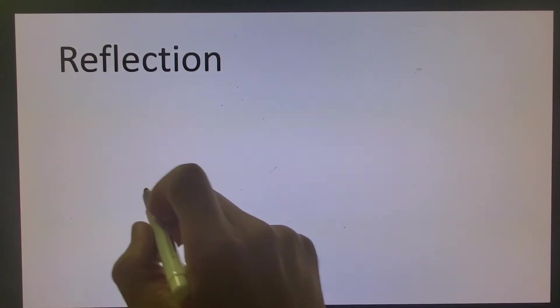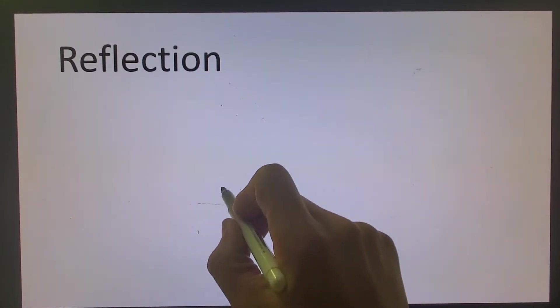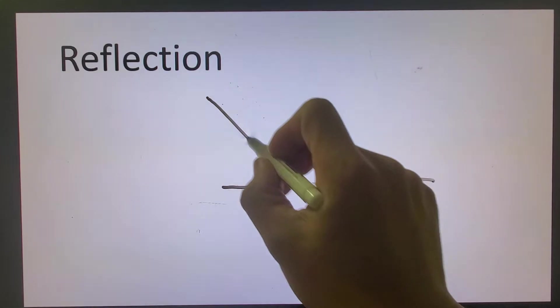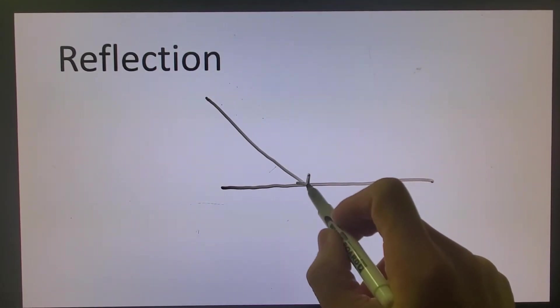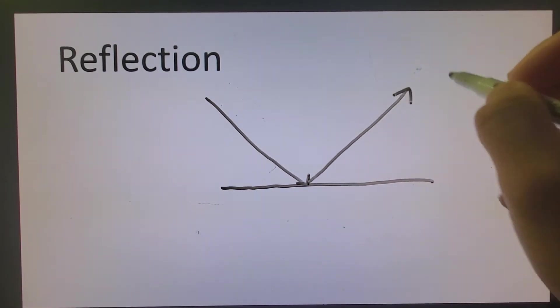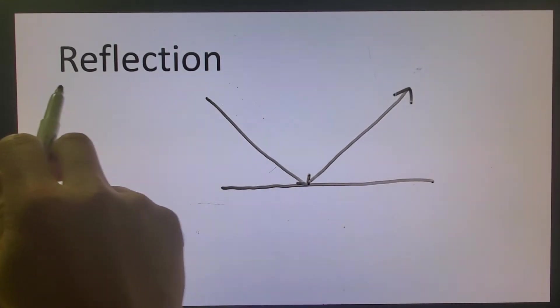What is reflection? If you have a flat surface, when you have a light beam shining on this surface, what will happen? There's another beam that will come off and go this way, and this is called reflection.